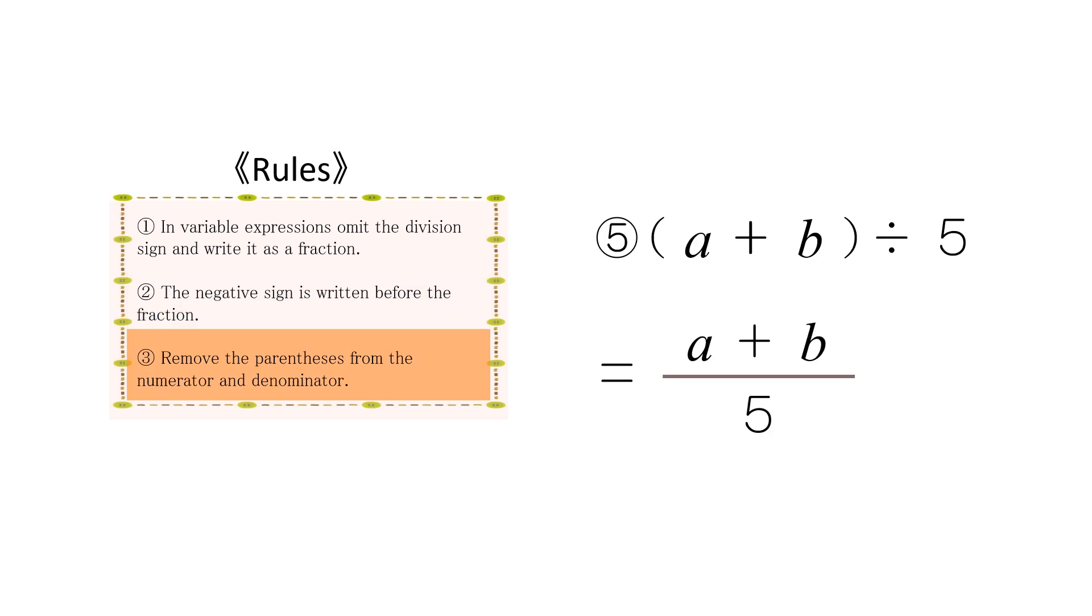The third rule is that we remove the parentheses from the numerator and denominator. (a+b) divided by 5 is expressed as (a+b)/5.